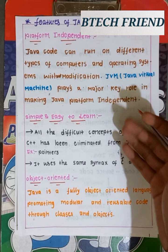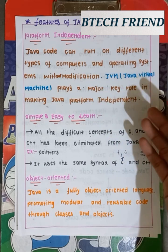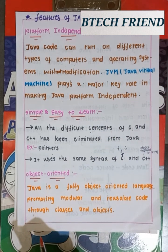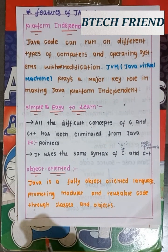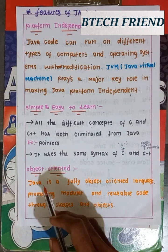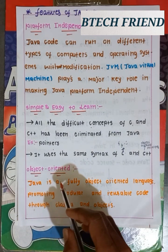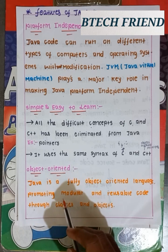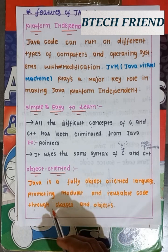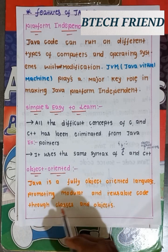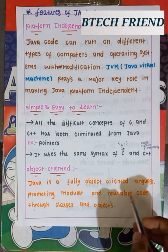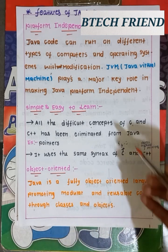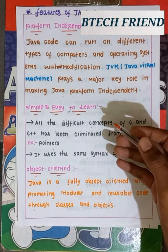Java is an object oriented language. Java is a fully object oriented language, promoting modular and reusable code through classes and objects.